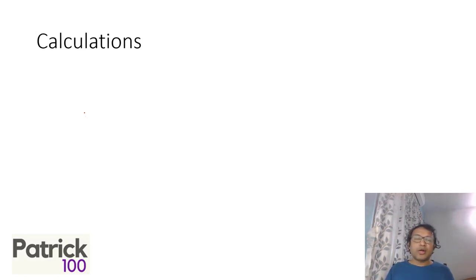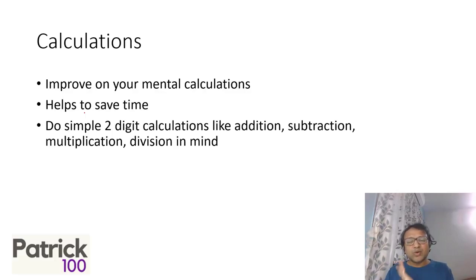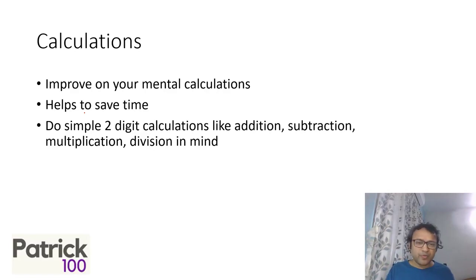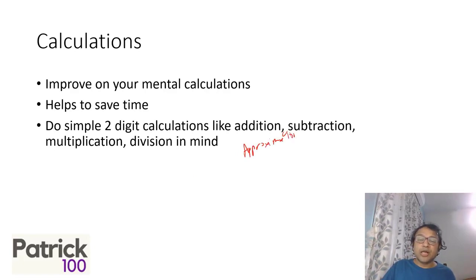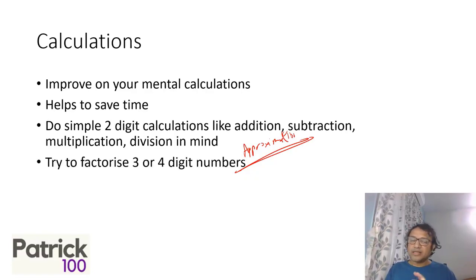Calculations help you save time, so focus on improving mental calculations — simple two-digit addition, subtraction, multiplication, and division is sufficient. In DI you do have big calculations, but you can always approximate them to two-digit calculations. Learn approximation — it's the key to improving in DI. When you do two-digit calculations mentally, also approximate and see how close your answers are to the actual answer. Practice factorizing three to four digit numbers regularly to become good and fast at calculations.